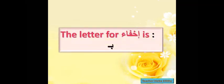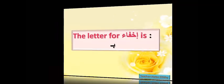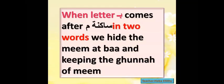Let's see what this means in examples. The letter for Ikhfa' is the letter Ba. That means I will find Meme Saakina first, and if I find letter Ba after it, I will make hiding — I will hide Meme at Ba. When letter Ba comes after Meme Saakina in two words — remember, in two words — we hide the Meme at Ba, keeping the Gunna.